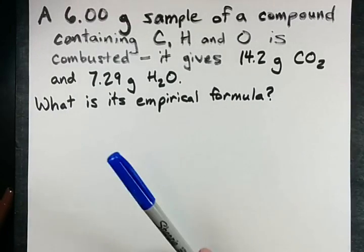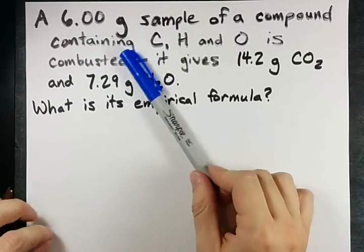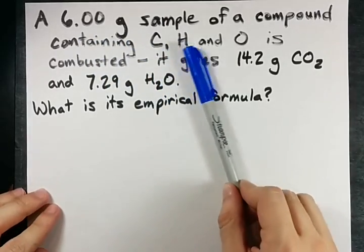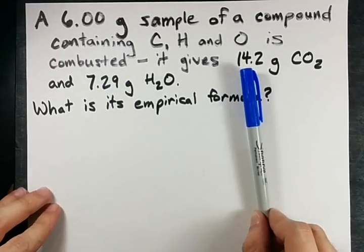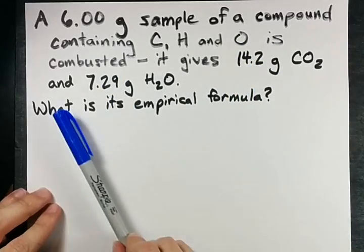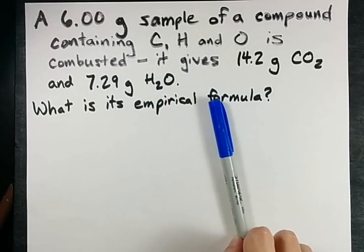All right, we have a tougher combustion analysis question here. Six grams of a compound that contains carbon, hydrogen, and oxygen is combusted and it gives 14.2 grams of carbon dioxide and 7.29 grams of water. We want its empirical formula.